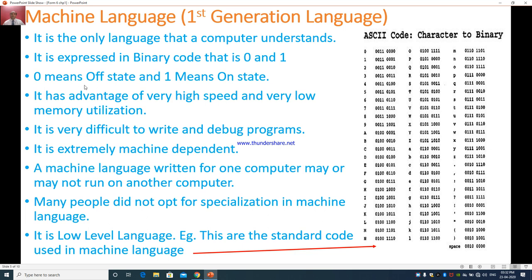What is zero is called as? Zero is called as off state and one means on state. So, you have to find a combination of zeros and one to write any particular character or a program. It has advantage of very high speed and very low memory utilization.